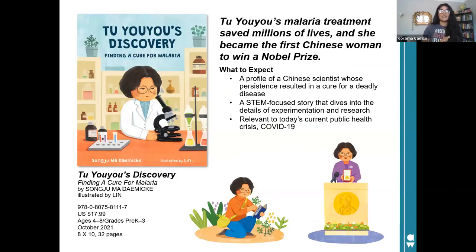Our next title is a wonderful picture book biography. Tu Yu Yu had been interested in science and medicine since she was a child. When malaria started infecting people all over the world in 1969, she went to work finding treatment. Trained as a medical researcher and healed by traditional medicine techniques when young, Tu Yu started experimenting with natural Chinese remedies. The treatment she discovered through years of research and experimentation is still used all over the world today. School Library Journal called it a much-needed biography of a woman scientist and a great addition to any library's STEM collection.